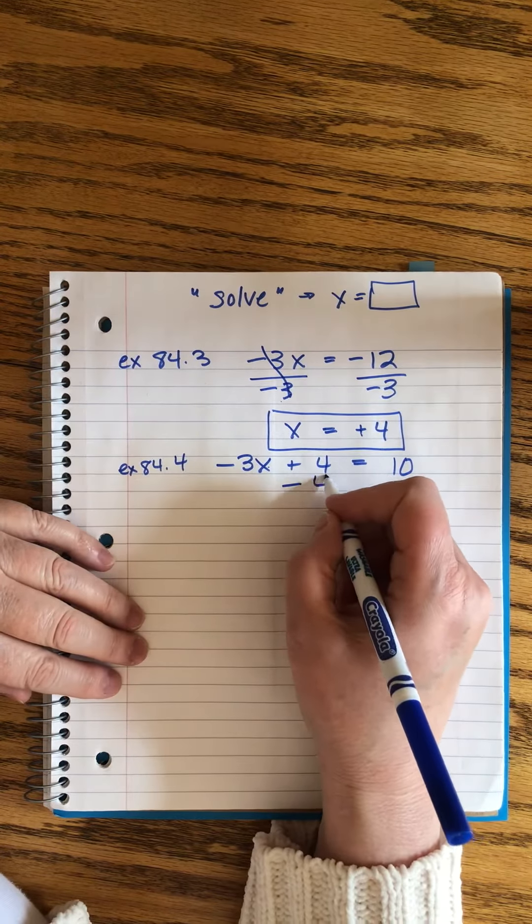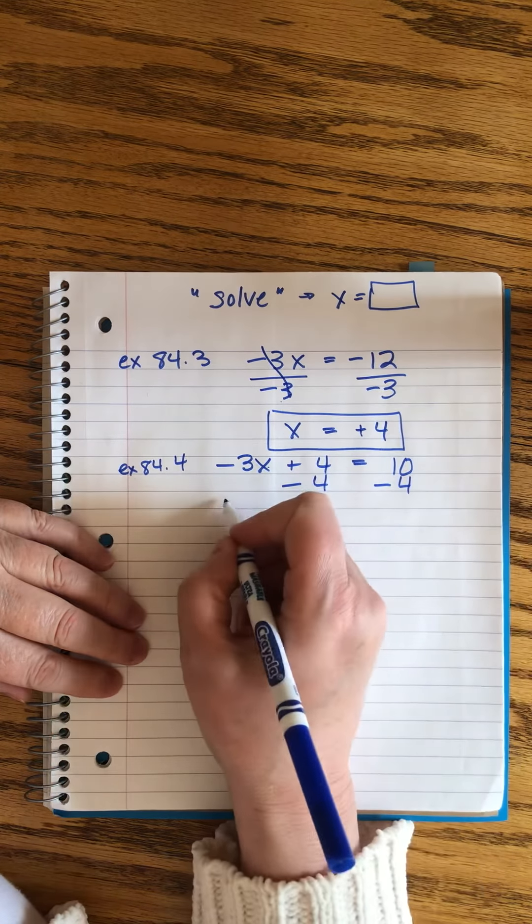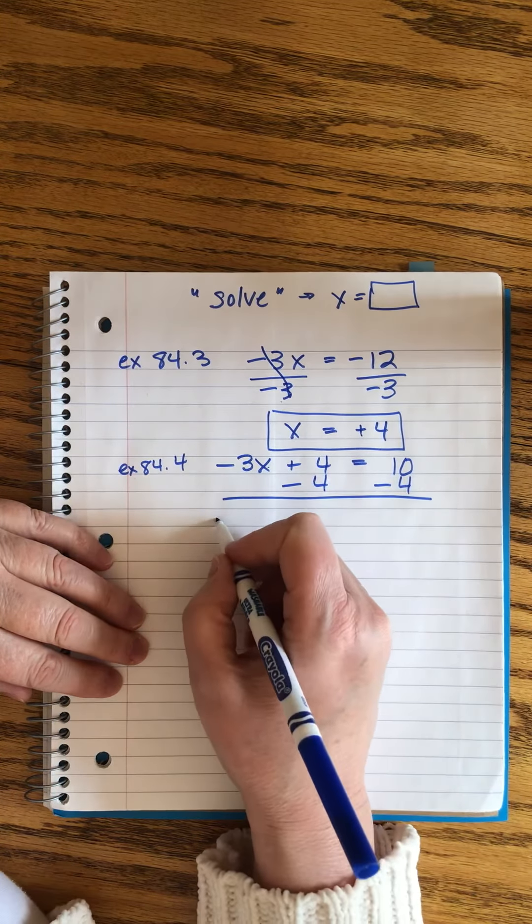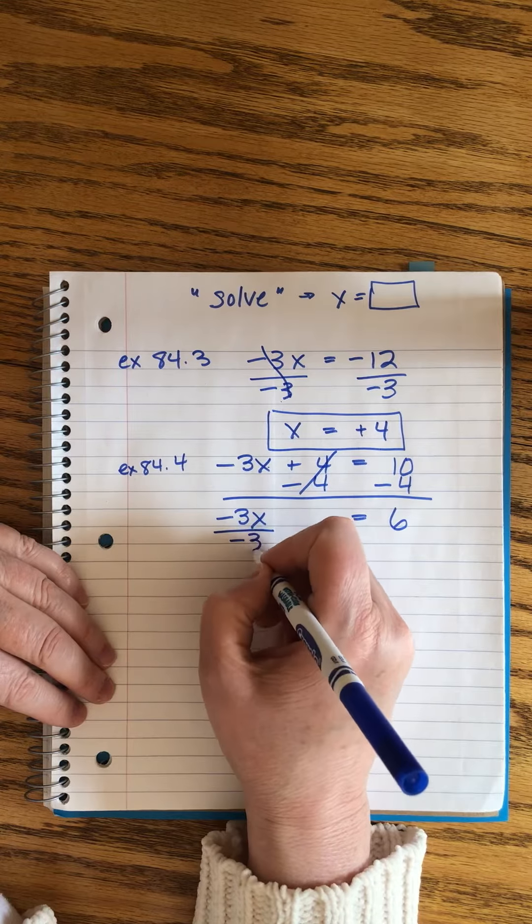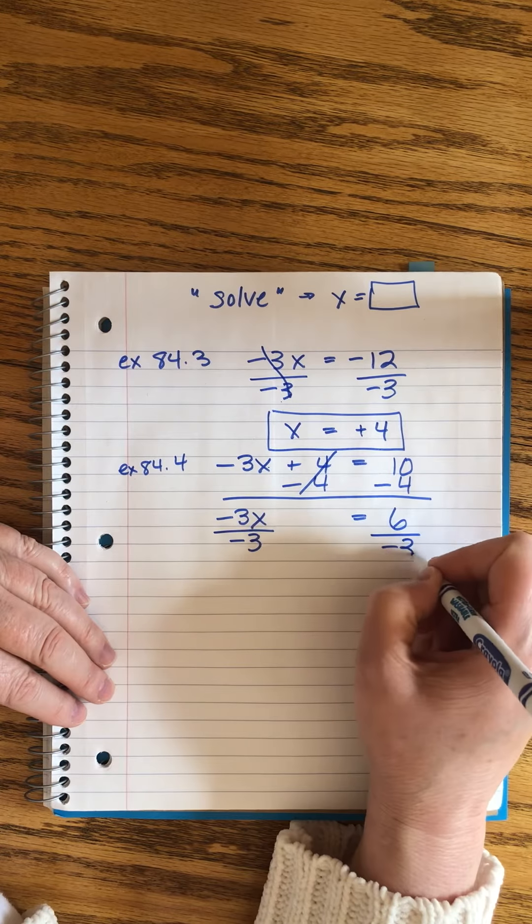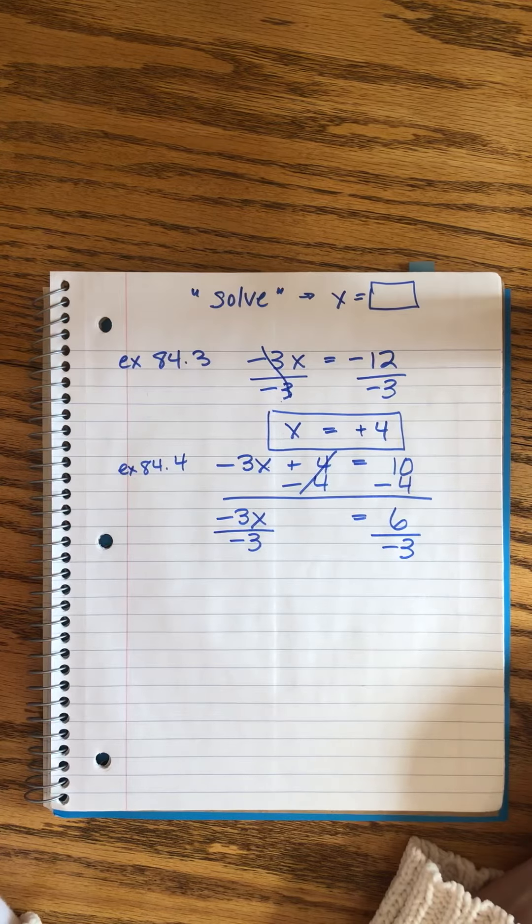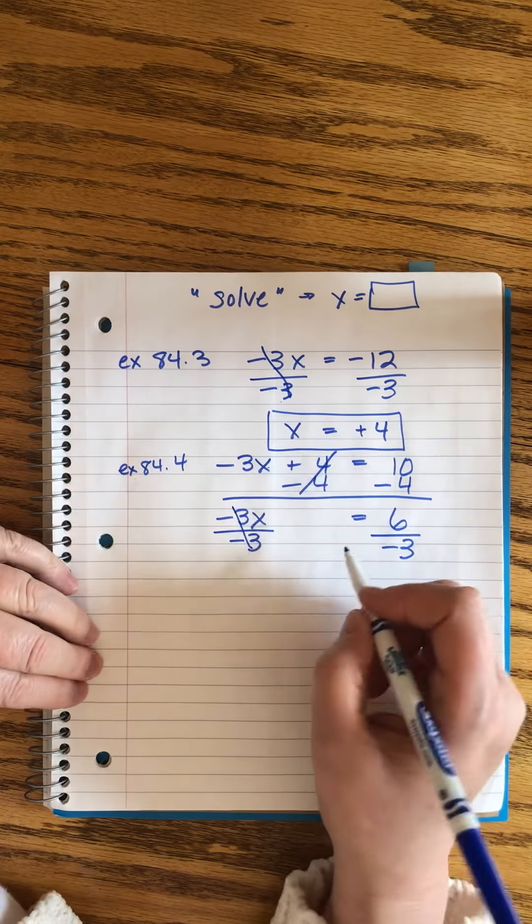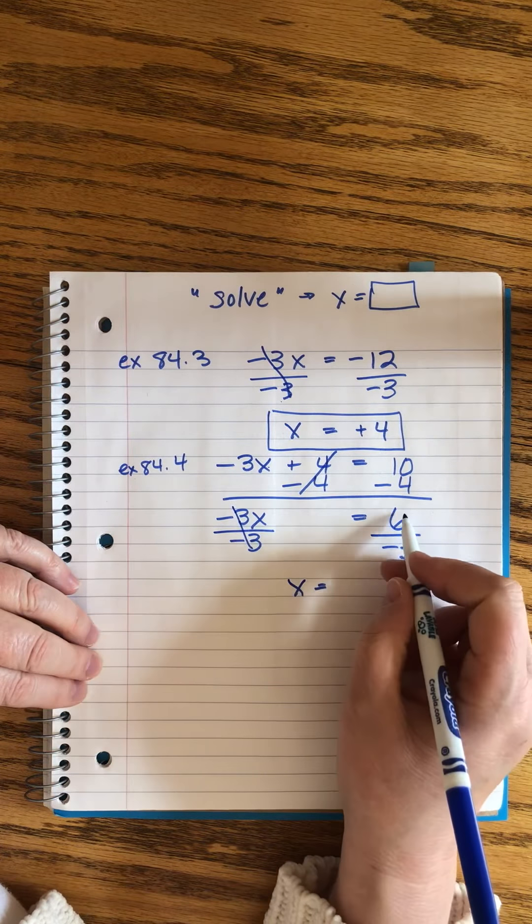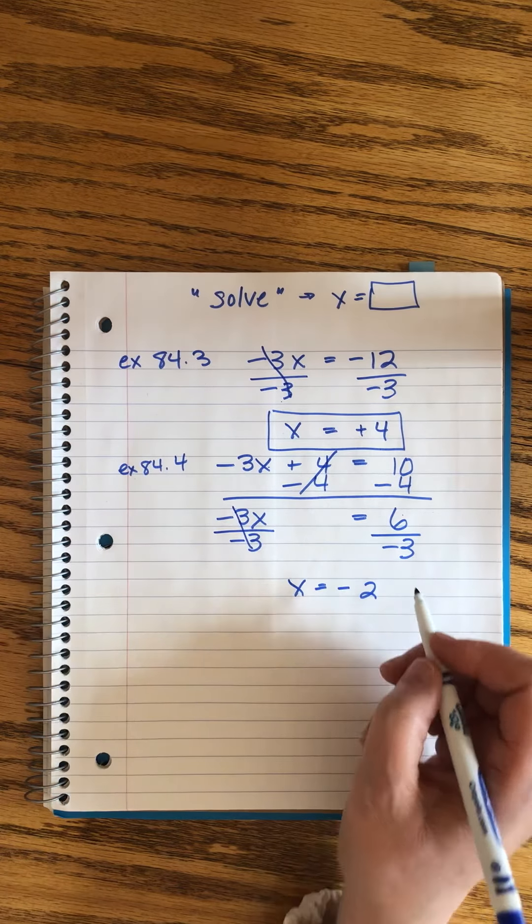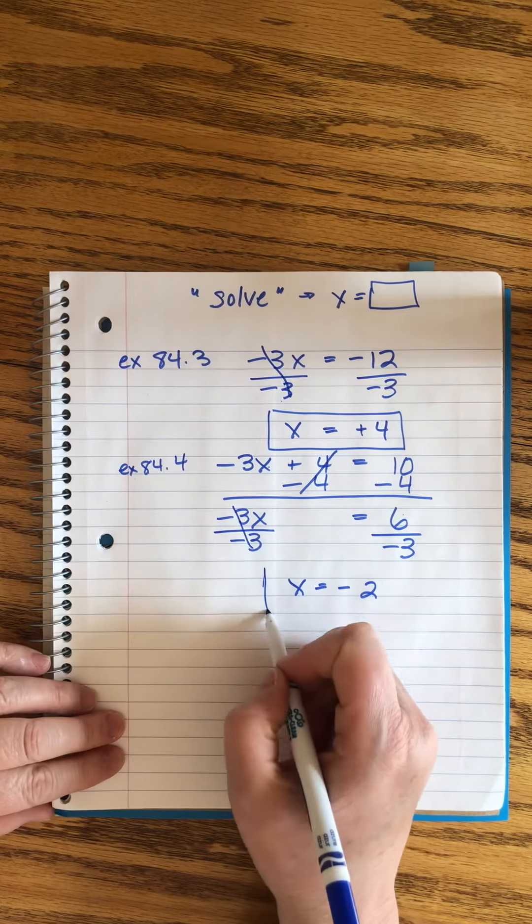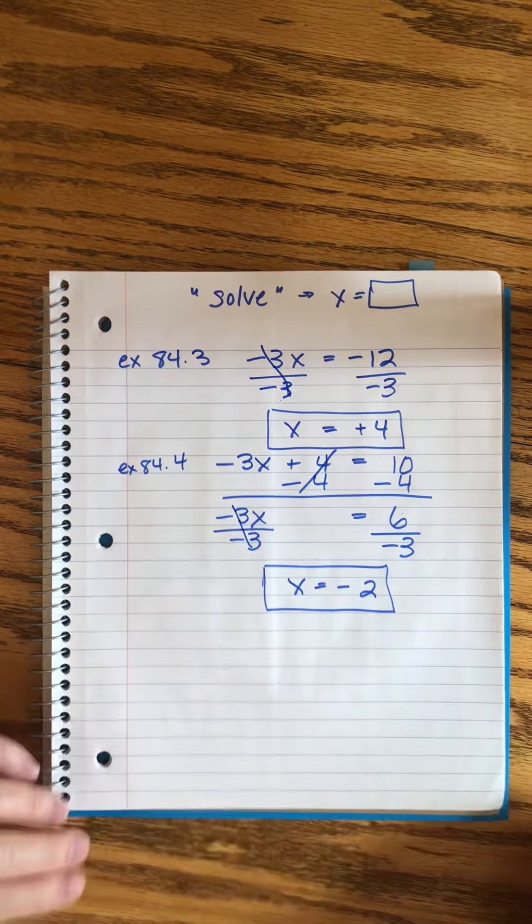This first chunk stays the same. 10 minus 4 is 6. Time for the best friend to go home. We're going to divide. We don't have any fractions in this problem, so we don't have to resort to reciprocal. This cancels. x equals 6 divided by 3 is 2, and we only have one negative, so we know our answer is negative. Ta-da!